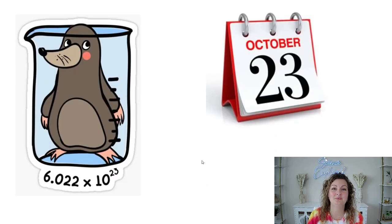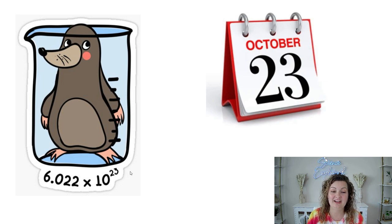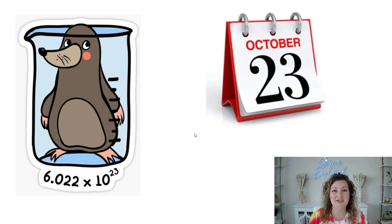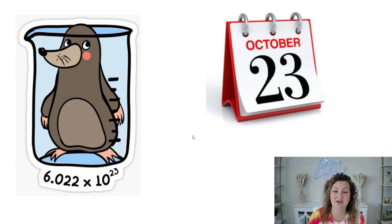So first off, we know the mole is Avogadro's number. So the date of mole day is going to be 10-23, or October 23rd. I never actually have mole day on October 23rd — feel free to — but I usually do mole day the review day right before our test of the moles unit. So that's when I recommend it, but of course you do mole day when you want to do mole day.